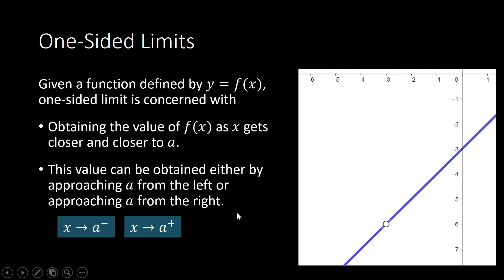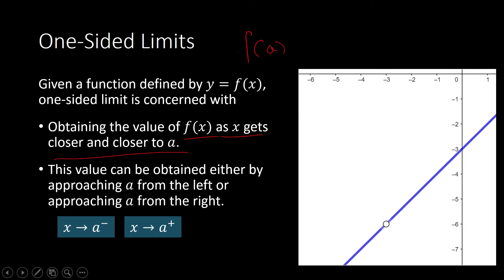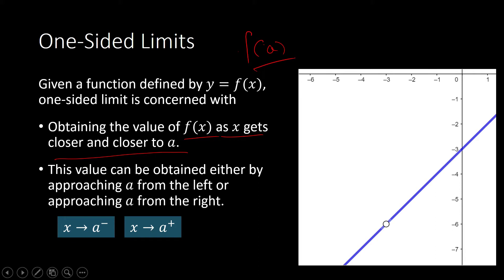Now you may be wondering: why do we have to get close to a, closer and closer to a, to get the value of f of x, when in fact we can just go straight to evaluating f of a? Why do we have to make things complicated? Well, sometimes our function has no value at a particular real number.